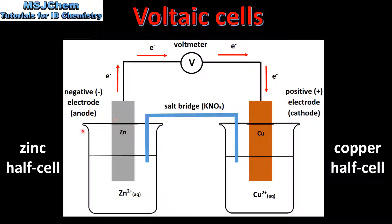The Zinc electrode is the negative electrode or the anode. The Copper electrode is the positive electrode or the cathode. The anode and cathode are connected by wires and we also have a voltmeter in the circuit. The two half cells are connected by a salt bridge, in this case KNO3, which is potassium nitrate.